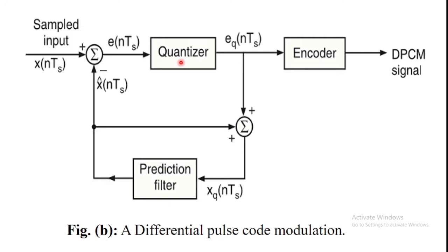Here is the block diagram of the differential pulse code modulation transmitter. It consists of a quantizer, prediction filter, two summer circuits, and an encoder. X(nTs) is the sample value of the input signal X(t). X̂(nTs) is the prediction filter output or predicted value. E(nTs) is the error signal or prediction error, or input to the quantizer. EQ(nTs) is the quantizer output or quantization error signal. XQ(nTs) is the input of the prediction filter.